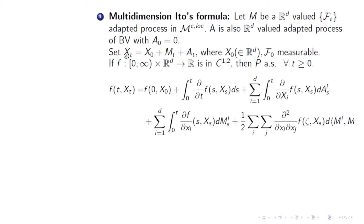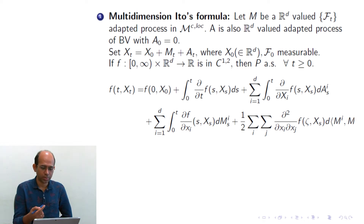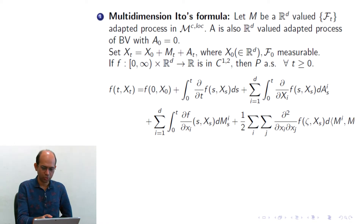If we consider this semimartingale X_t and a function f which is a function of time — earlier our function f was not explicitly dependent on time t, only dependent on the space X — but here we allow f to be a function of time and also a function of X_t. The domain is [0,∞) × Rd, the Cartesian product of these two sets. We need to assume differentiability of f; here we consider f to be C^{1,2}, meaning once differentiable with respect to time and twice differentiable with respect to space.